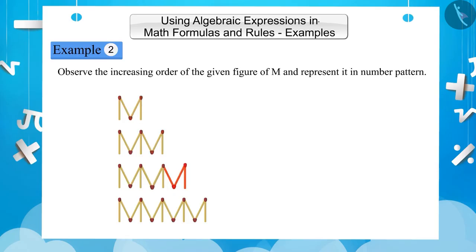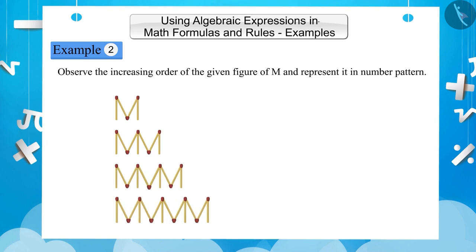As we can see, the first M has one additional matchstick in comparison to the rest. To make a number pattern of the increasing order of the shape of the given M, if we consider the number of matchsticks as a term, we can see that four matchsticks in the first figure, seven in the second, ten in the third, and thirteen in the fourth have been used.